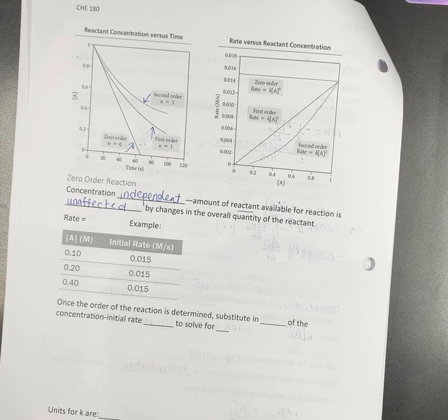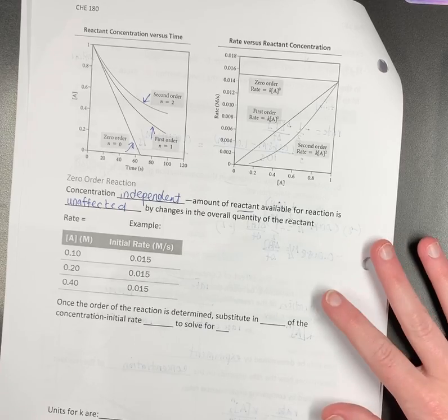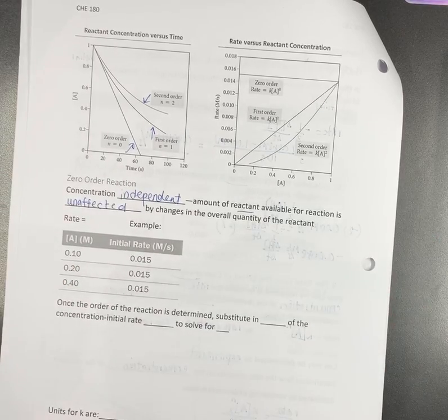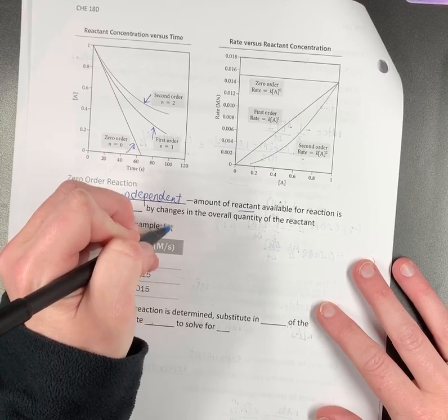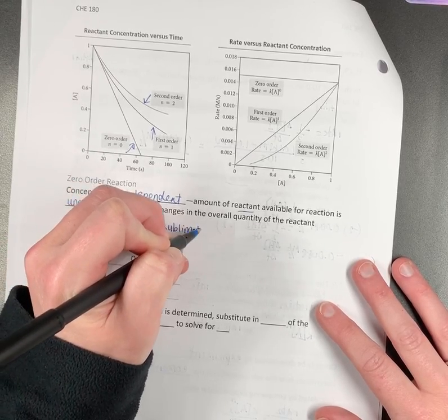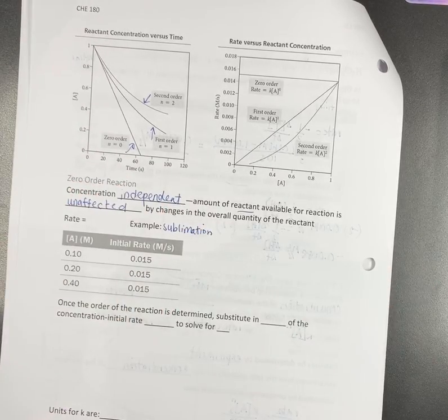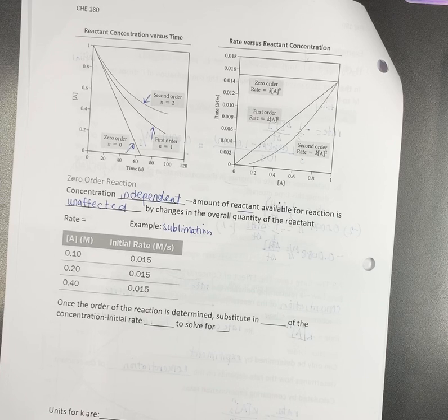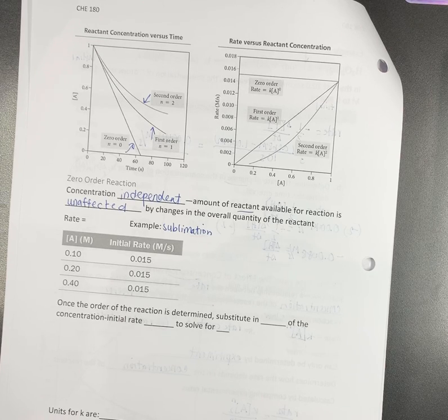So a good example of this would be if you were measuring the rate of something where you were doing like sublimation. The sublimation, you have a solid, you're measuring the rate that it goes to a gas. Does it matter if you're looking at the solid, here's the solid, does it matter what's going on down at the bottom of the solid? No. Only the ones at the surface matter. So if it's not at the surface, it can't become a gas.